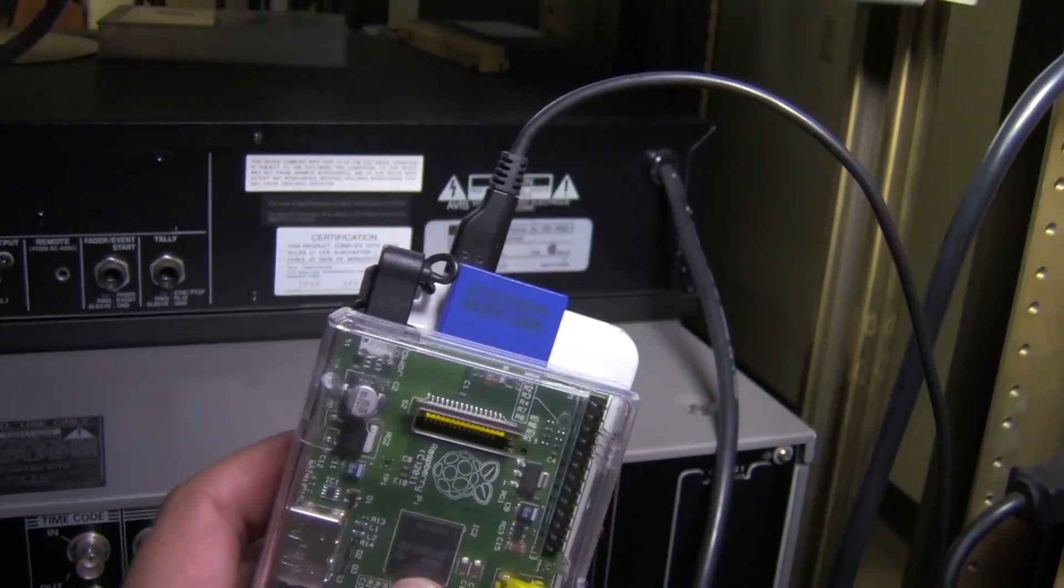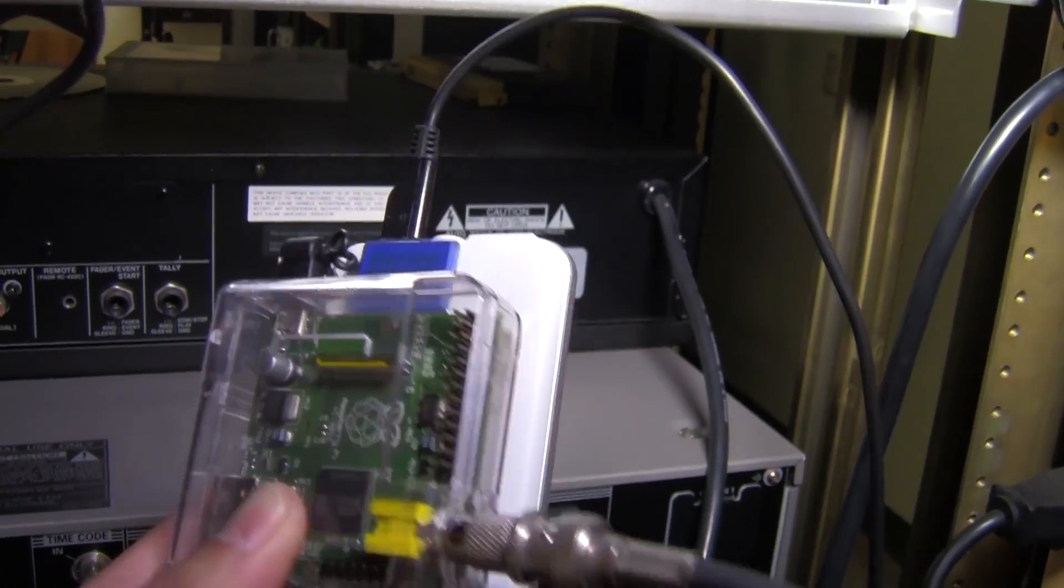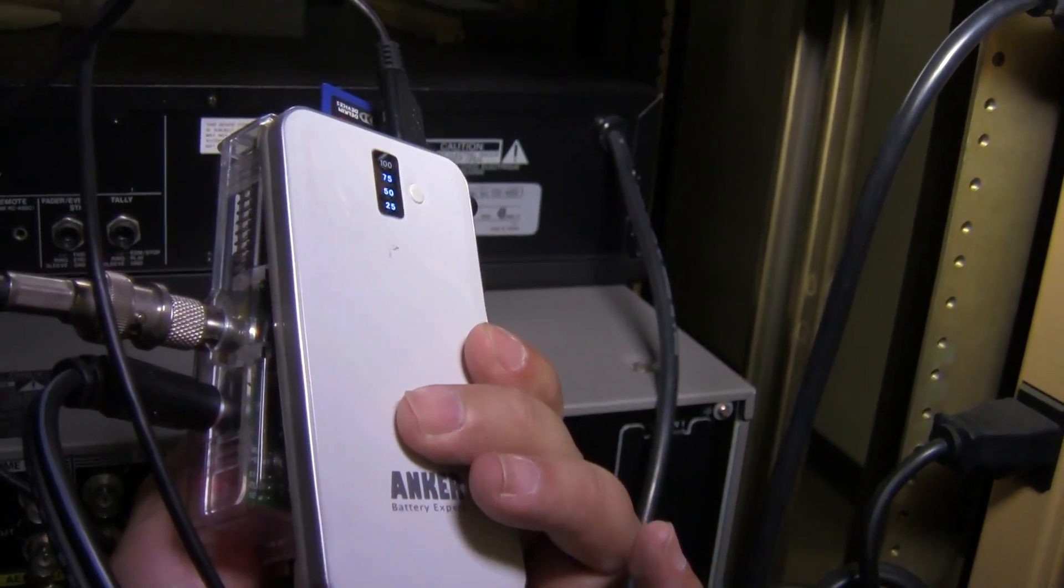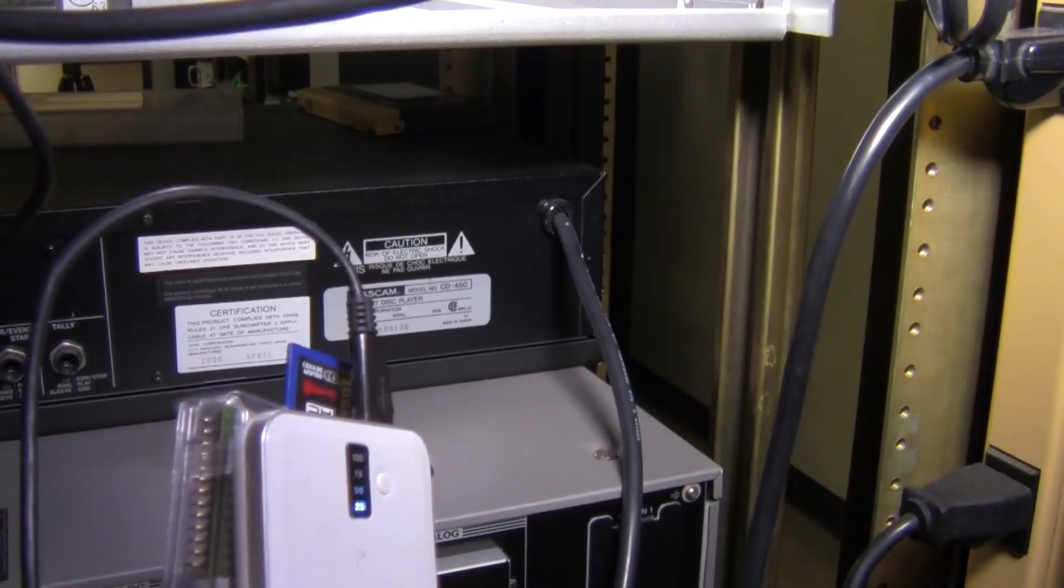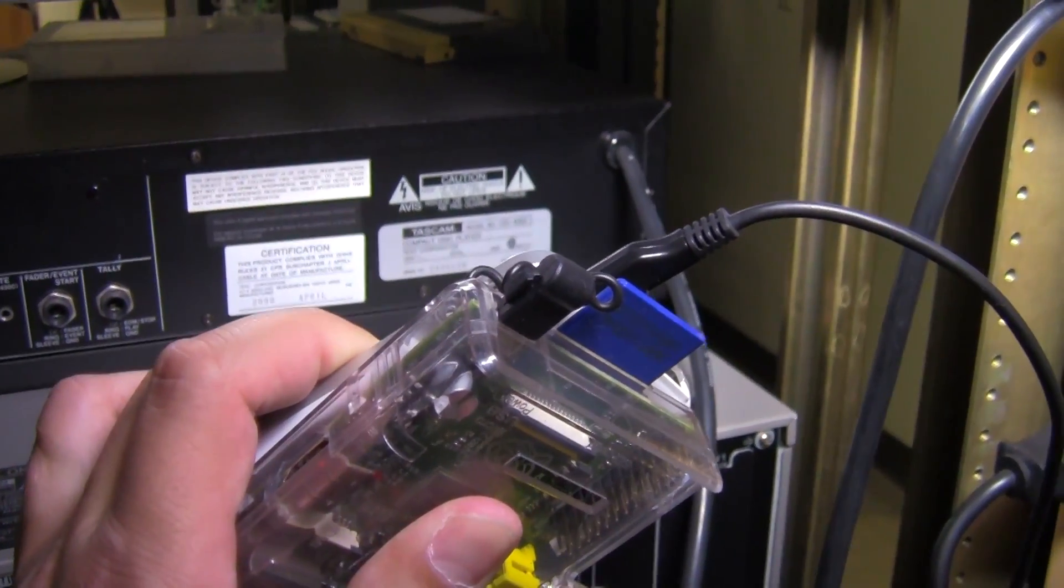And then we have the memory card that has the operating system on there. And then what I have here connected to it is a battery pack. This is normally a backup power battery pack for your cell phones. It's micro USB so that's what I have plugged in to the raspberry pi there.